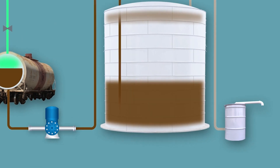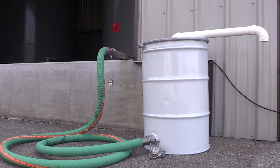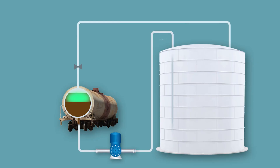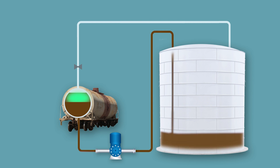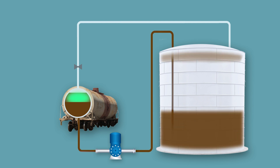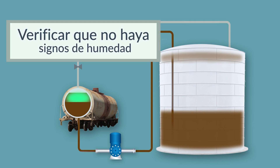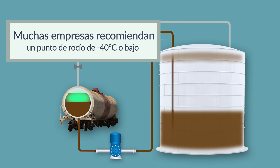Al descargar utilizando cualquiera de estos métodos, la práctica general de la industria es que todos los vapores de MDI de la descarga se absorban o se remuevan. Un sistema de intercambio de vapor en circuito cerrado que utiliza una bomba de producto es otro medio para descargar MDI. Circuito cerrado significa que no escapan vapores del sistema a la atmósfera y que no ingresa humedad al sistema. Si se usa aire seco, es extremadamente importante comprobar que no haya signos de humedad. Muchas empresas recomiendan un punto de rocío de menos 40 grados centígrados o menos 40 grados Fahrenheit.